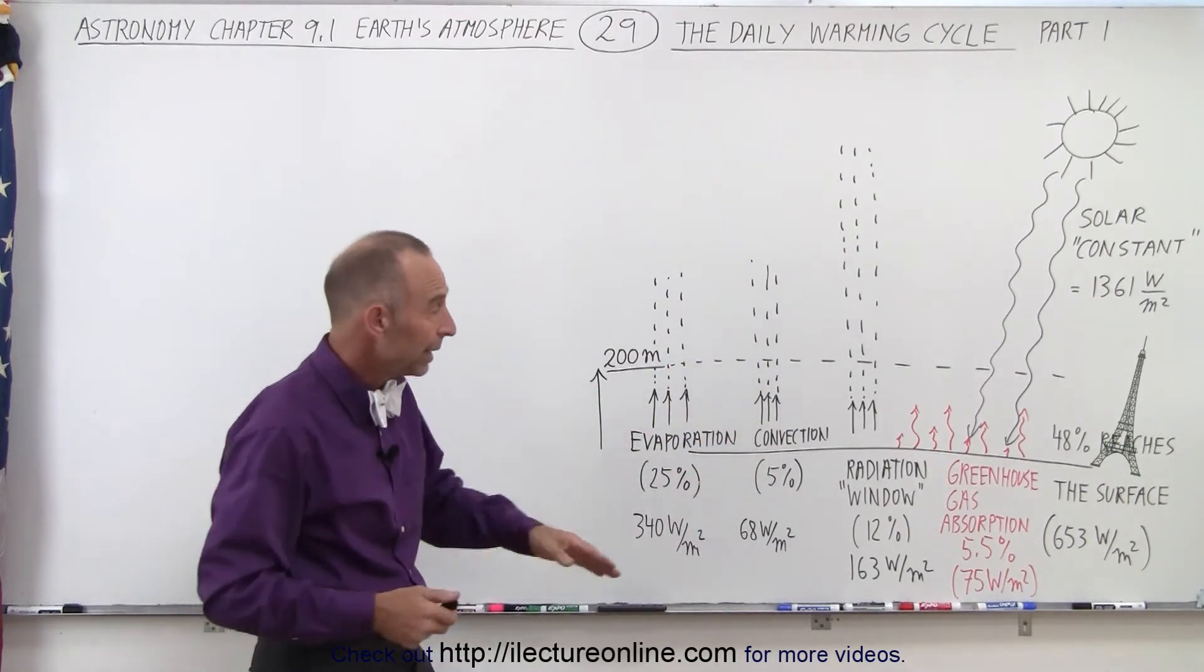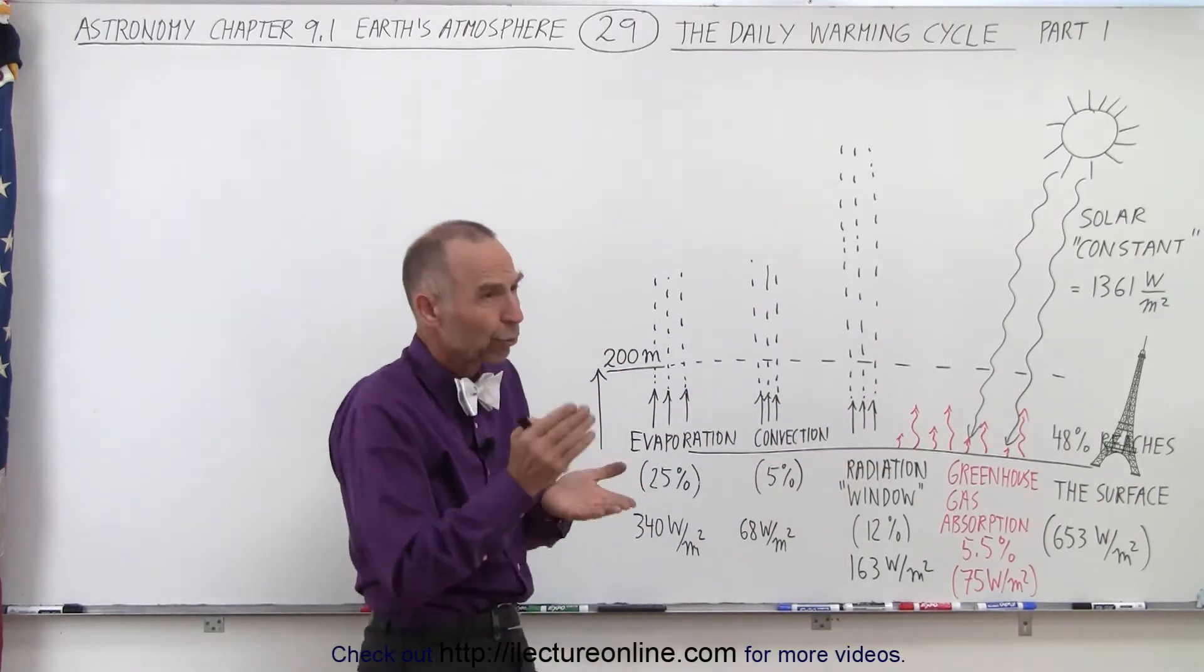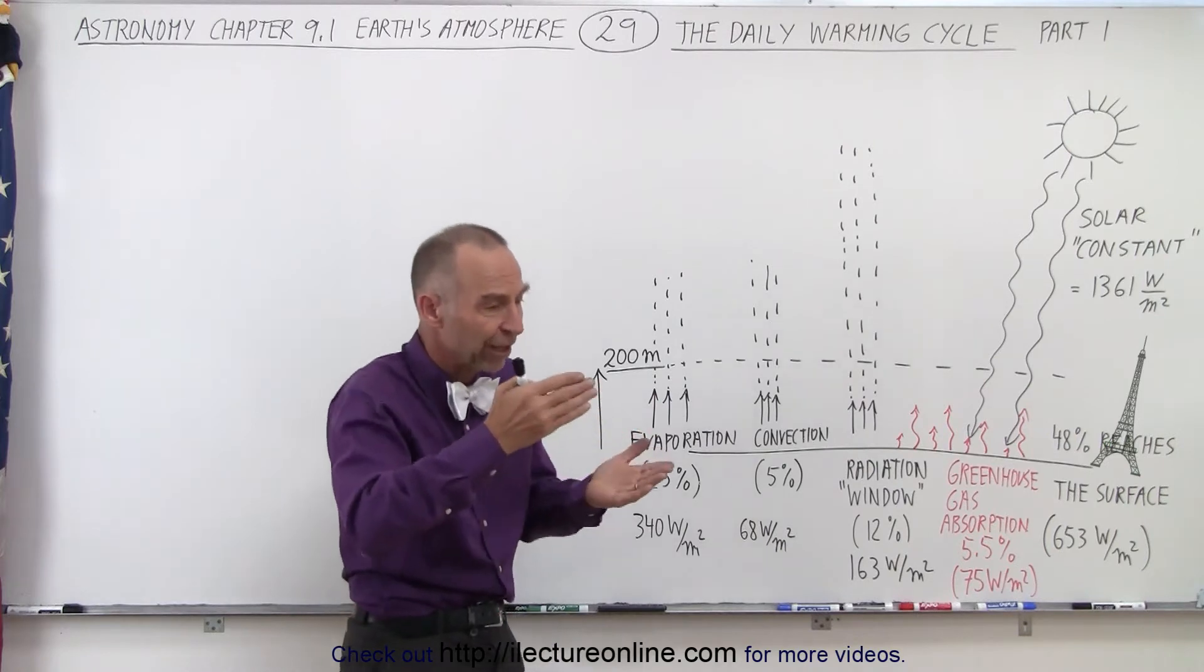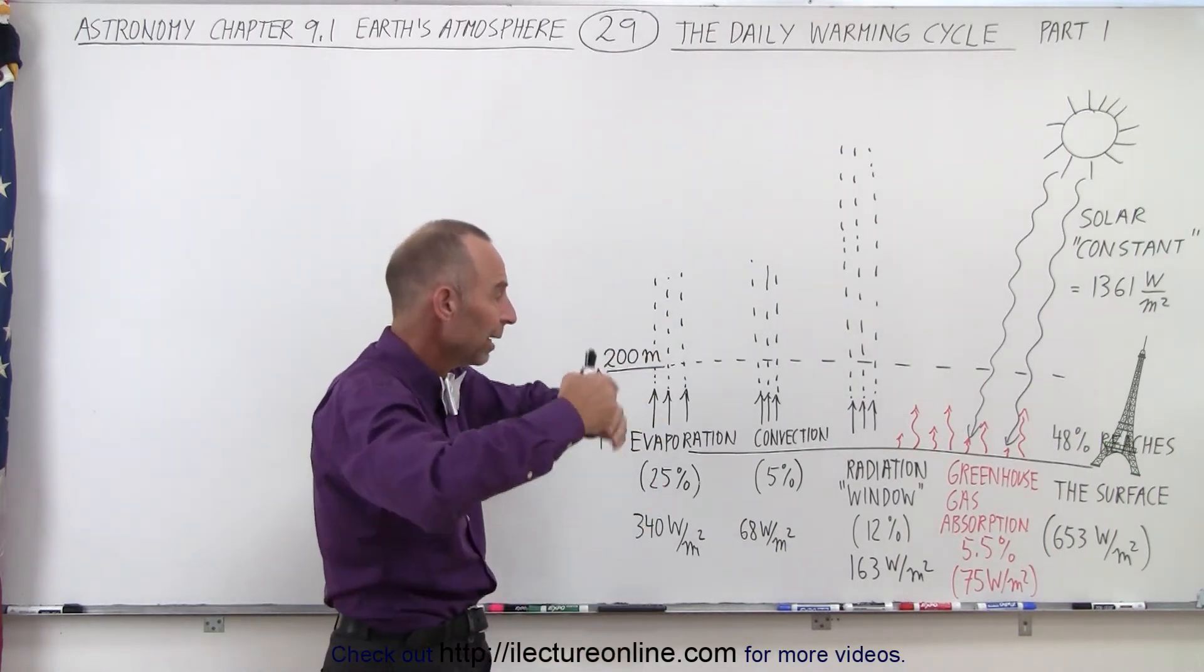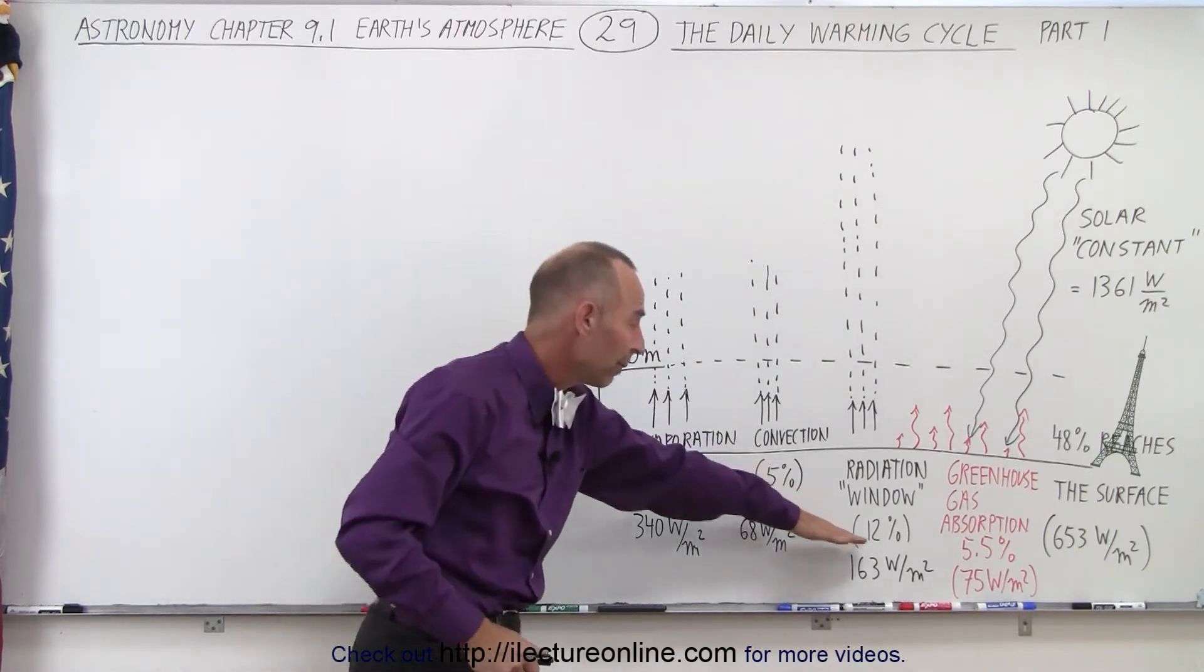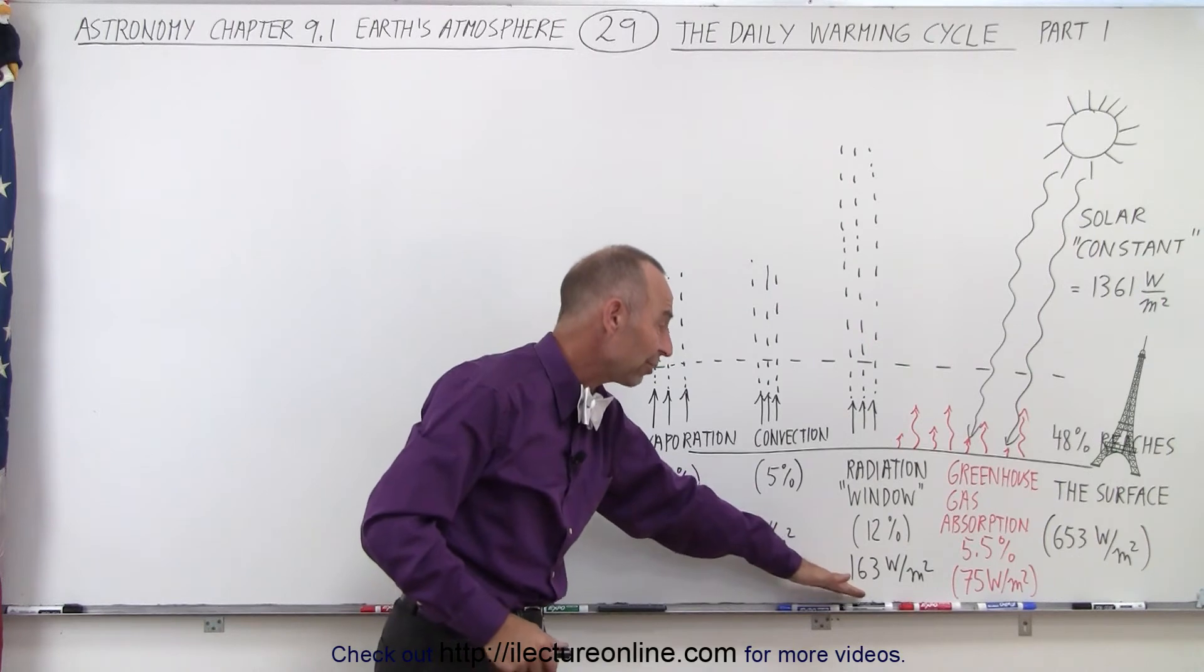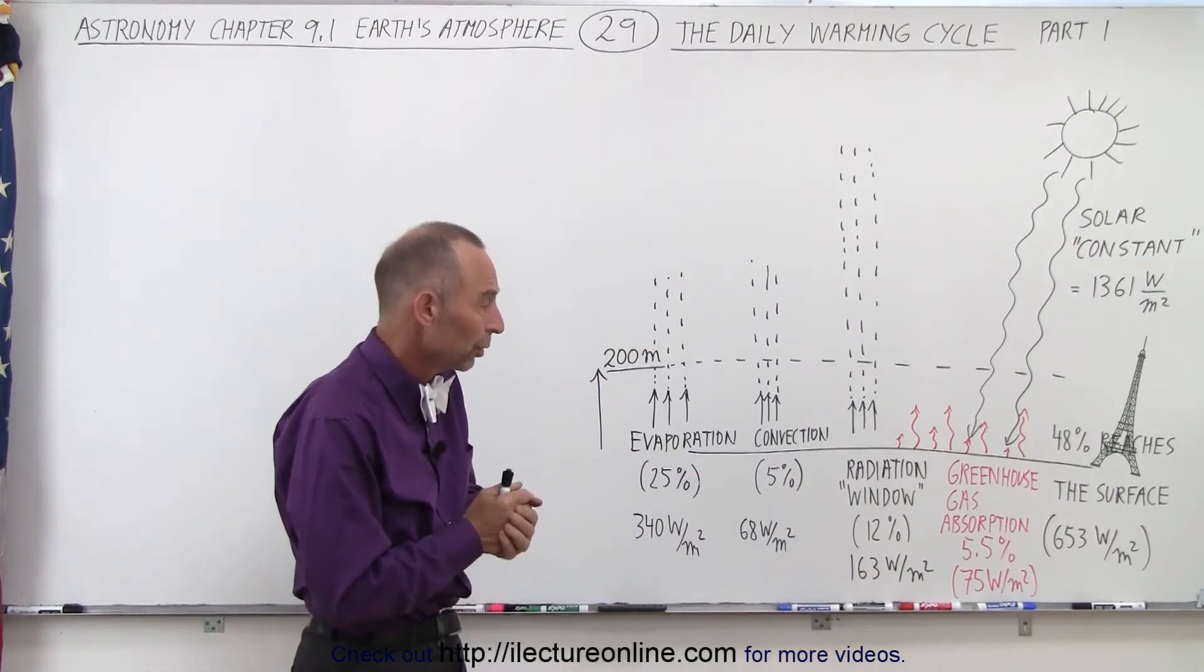A third way is energy that escapes through the radiation window. There's a window that's roughly between 7 micrometers and 14 micrometers, where a lot of the energy that goes into the atmosphere continues through unhindered and reaches space. About 12%, or 163 watts per square meter, simply goes back into space and doesn't warm up the world or the atmosphere.